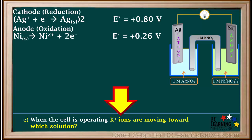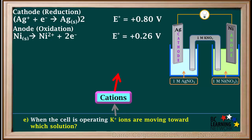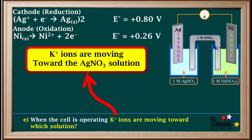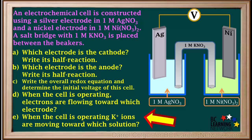Part E asks which way K⁺ ions are moving as the cell operates. K⁺ ions are cations because they are positive, and cations in the salt bridge always move toward the solution surrounding the cathode. So potassium ions are moving toward the silver nitrate solution as the cell operates. Given the materials an electrochemical cell is constructed from and the standard reduction table, we were able to answer many questions about the cell.